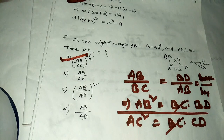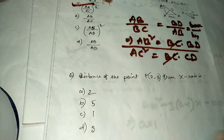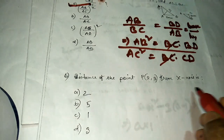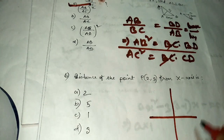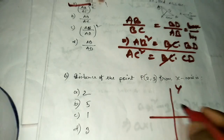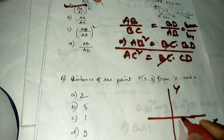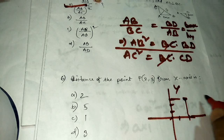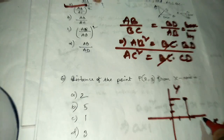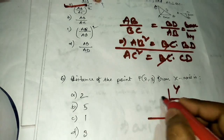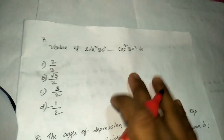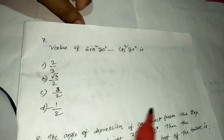Question number six: the distance of the point P(2, 3) from the x-axis. Plot the point — x is 2, y is 3. The distance from the x-axis is simply the y-coordinate, which is 3. The answer is 3.